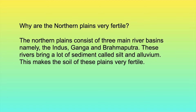Why are the northern plains very fertile? The northern plains consist of three main river basins, namely the Indus, the Ganga and the Brahmaputra. These rivers bring a lot of sediment called silt and alluvium, and this makes the soil of the plains very fertile.